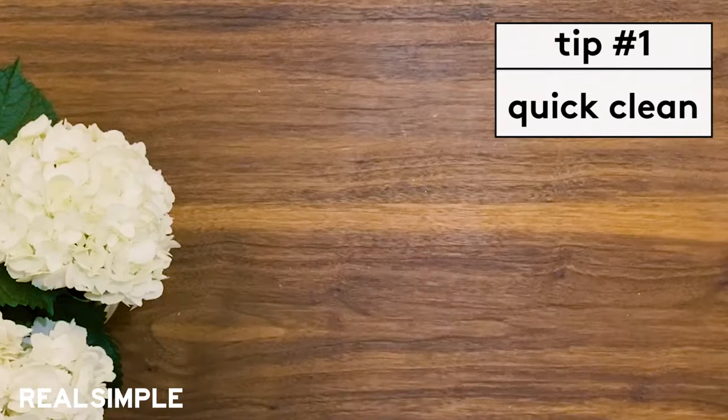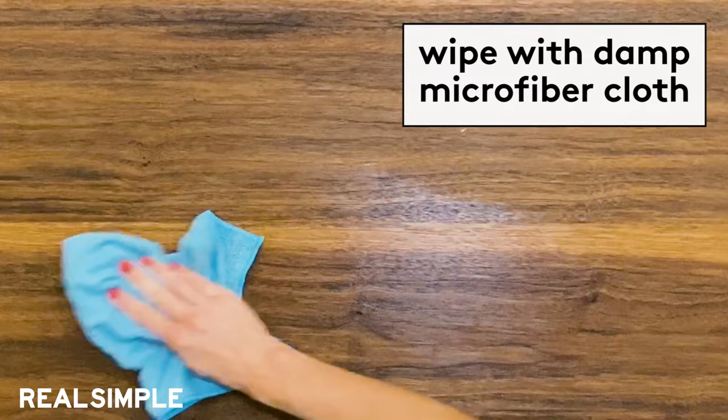First, you want to take everything off of the table. Then grab a damp microfiber cloth and use it to wipe away any dust or grime that is on the wood furniture.